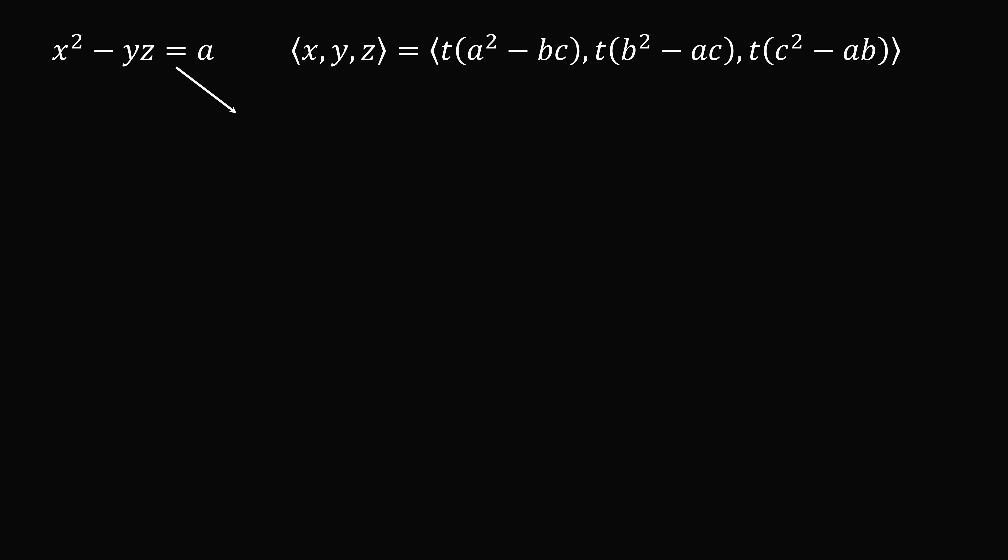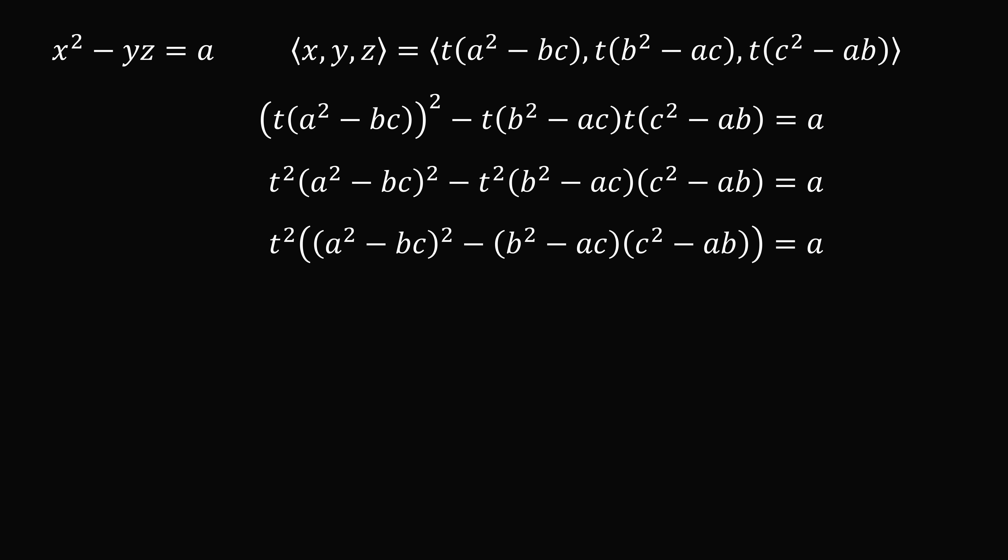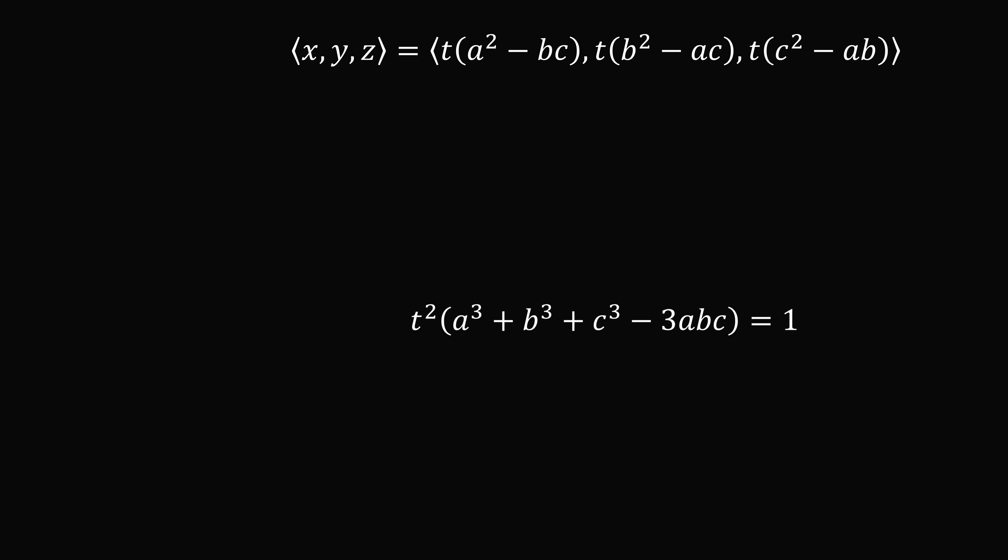We know that x squared minus yz equals a. We'll substitute what x is equal to, what y is equal to, and what z is equal to. Now, we're carefully going to simplify this equation to solve for t. We're going to first square this term. Then, we have t squared in the first term and in the second term, which we can factor out. Now, we just carefully need to work out some of this algebra. Some terms will cancel out, and we can simplify. From here, we've supposed that a is not equal to zero. So, we can divide both sides by a. Now, we will solve for t squared. t squared equals 1 divided by a cubed plus b cubed plus c cubed minus 3abc. Then, we take the square root of both sides. t equals plus or minus 1 divided by the square root of a cubed plus b cubed plus c cubed minus 3abc.